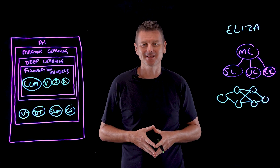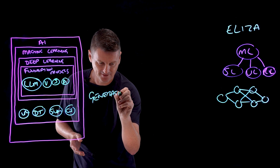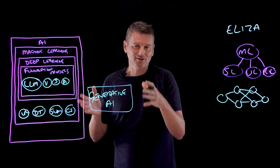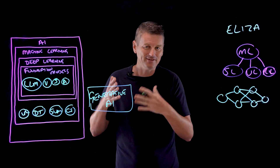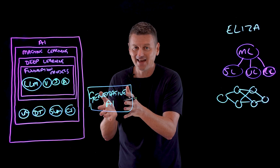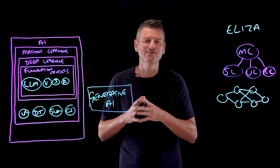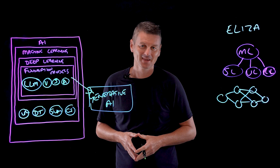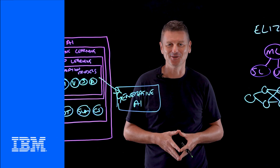One last term that's gaining traction is generative AI. This term pertains to models and algorithms specifically crafted to generate new content. While foundation models provide the underlying structure and understanding, generative AI is about harnessing that knowledge to produce something new — it's the creative expression that emerges from the vast knowledge base of these foundation models. And with that, we've fully filled out our AI buzzword bingo scorecard.